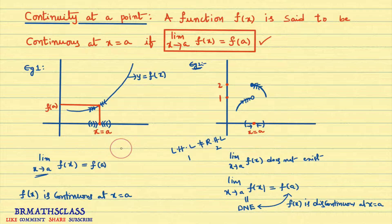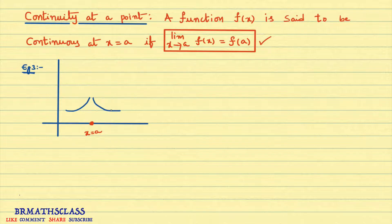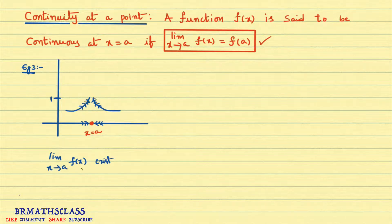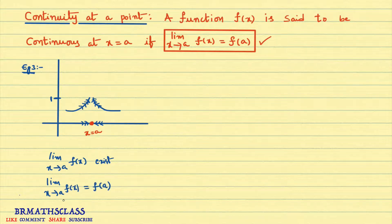Please watch this video till the end to understand continuity of a function at a point. Observe this example — this is a very good example. Check: does limit x tends to a of f(x) exist? As x approaches to a from the left, the function approaches a particular value — suppose we take it as 1. As x approaches to a from the right, the function also approaches 1. So from both left and right the function approaches 1, therefore limit x tends to a of f(x) exists.